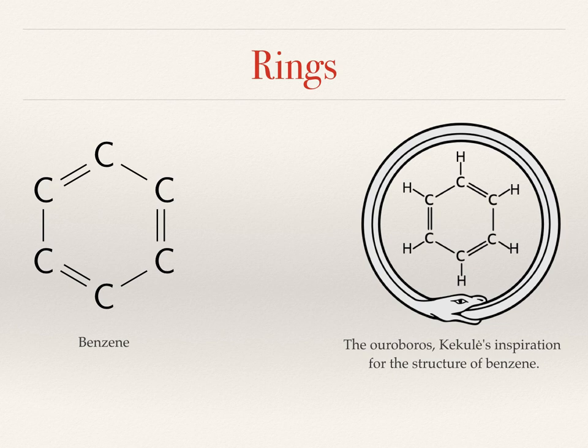Benzene is a chemical derived from crude oil and it had long fascinated chemists. Early chemists had worked out its composition — they knew it contained six carbon atoms and six hydrogen — but they couldn't make this fit into a linear molecule; the structure just would not make sense. The story goes that the chemist Kekulé fell asleep one night whilst puzzling over the structure of benzene, and the answer came to him in a dream in which he saw the Ouroboros, a snake swallowing its own tail. He realised that if benzene was a ring, then the structure and its composition would make sense.